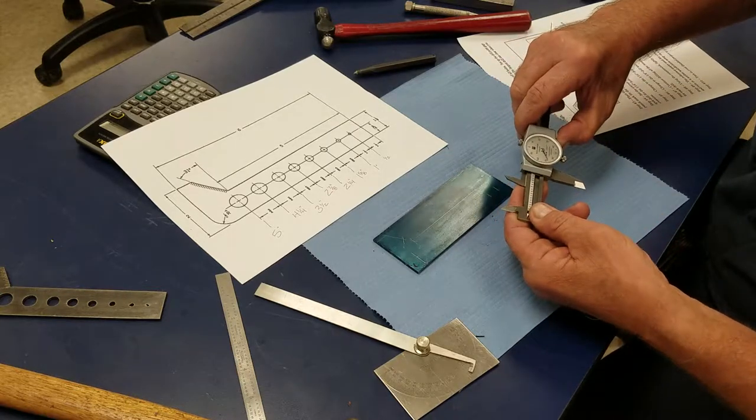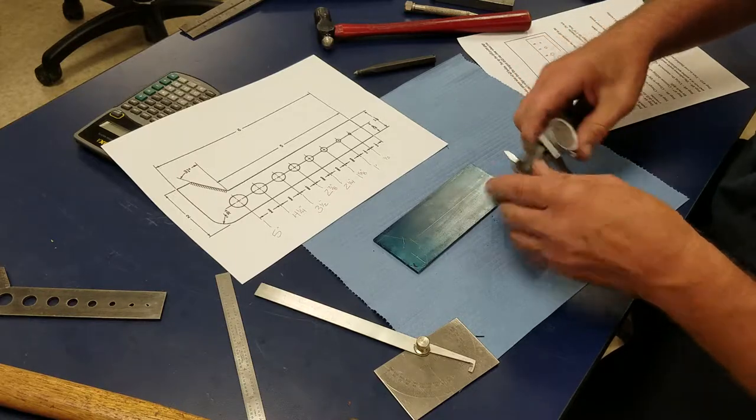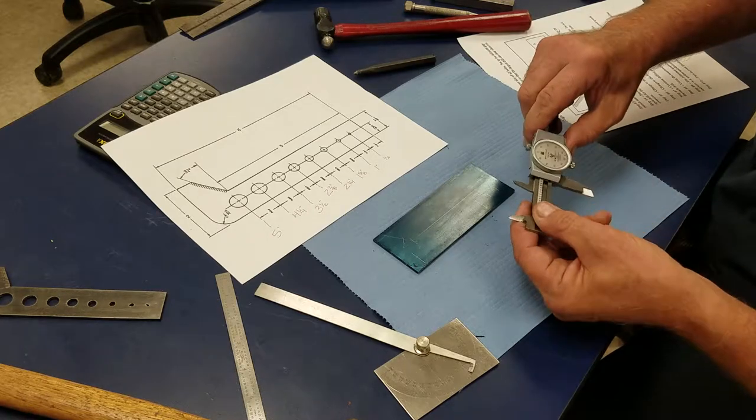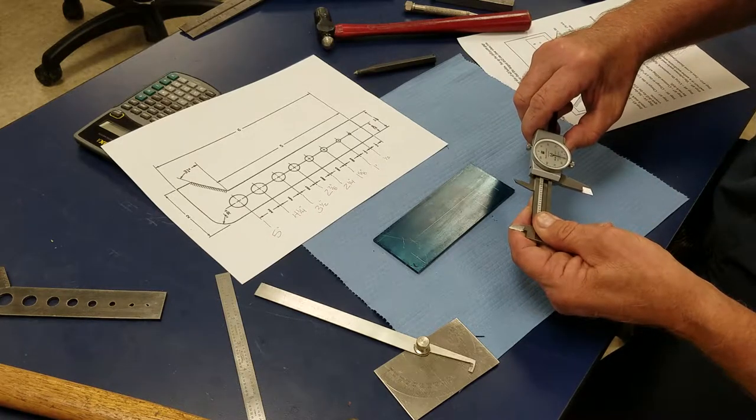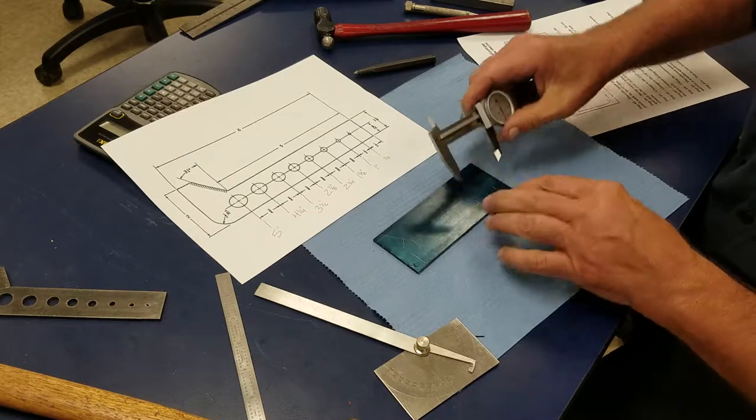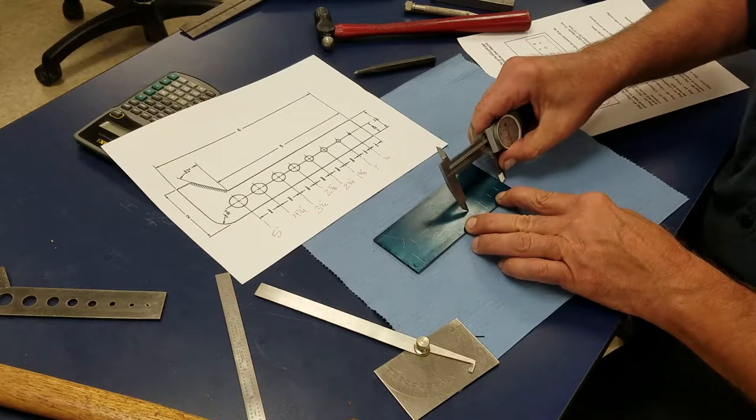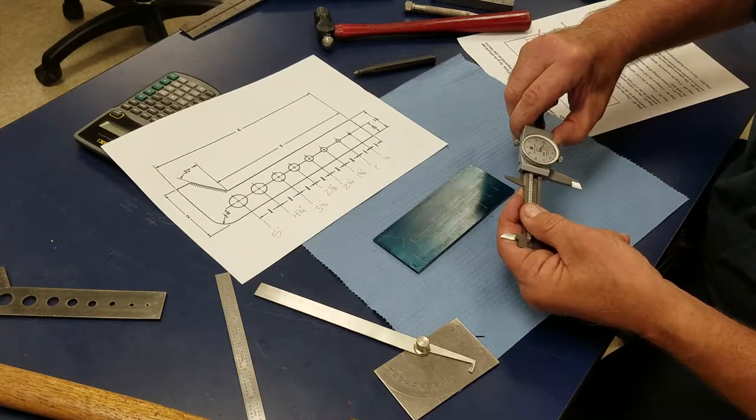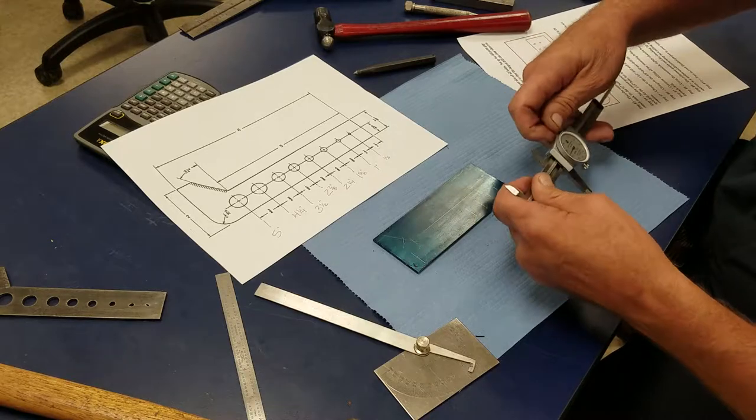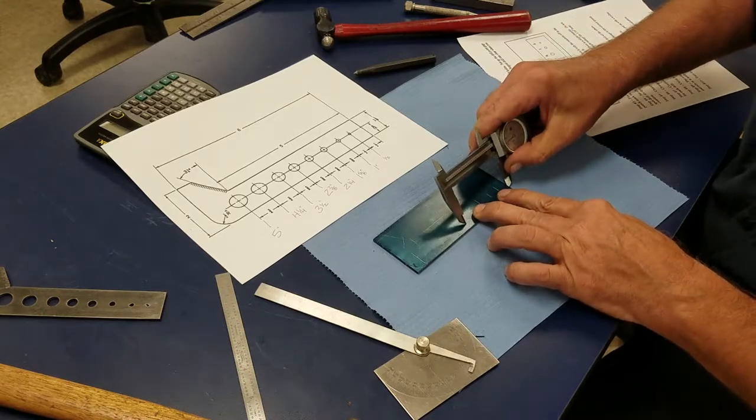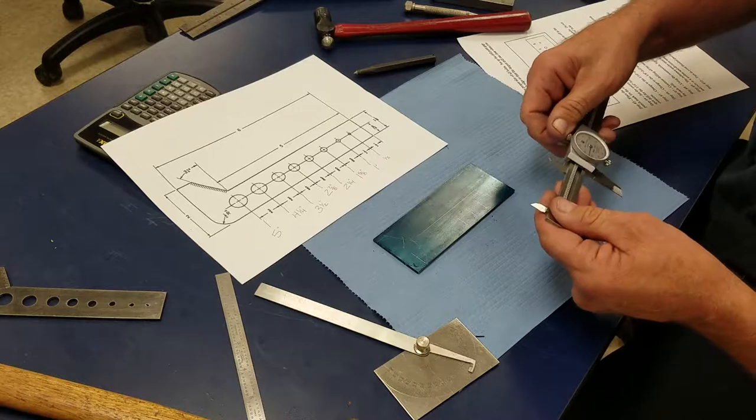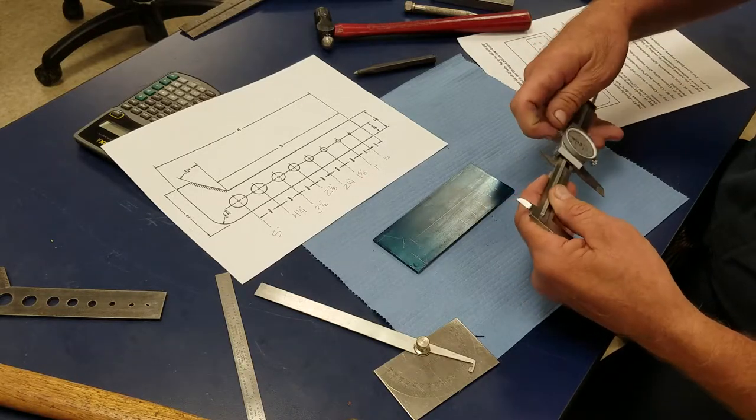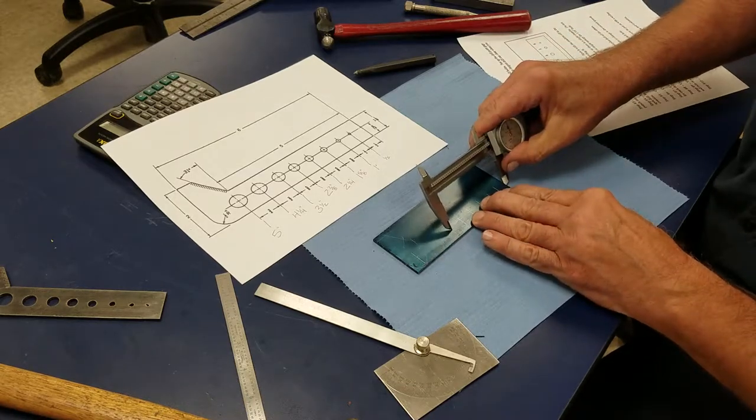Now I'm going to go 1 and 5/8, one point six two five, just like that. Now we're going to go 2 and a quarter, two point two five oh, right there. It is much faster to use your calipers than to use the steel rule and the scribers. Now we'll go 2 and 7/8 which is 2.875, two point eight seven five.